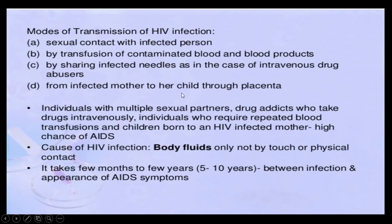The different modes of transmission of HIV are: first, sexual contact with an infected person, especially if a person is having multiple sex partners; second, by transfusion of contaminated blood and blood products; third, by sharing infected needles in the case of intravenous drug abusers; and fourth, from an infected mother to her child through the placenta.